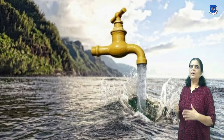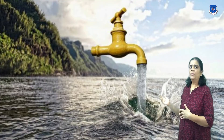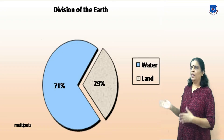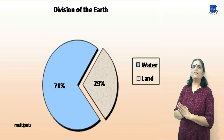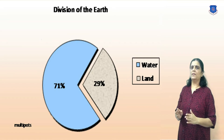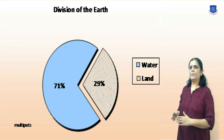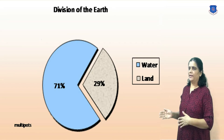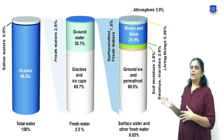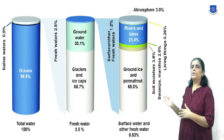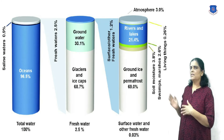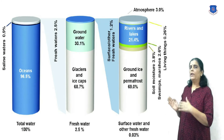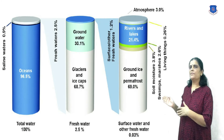Water is a vital natural resource which forms the basis of all life. It is one of the marvelous gifts to us. On the surface of earth, 71% is covered by seas and oceans and the remaining 29% is occupied by land. As you can see in the figure, 96.5% of the water on earth is salt water; however, only 2.5% is fresh water.